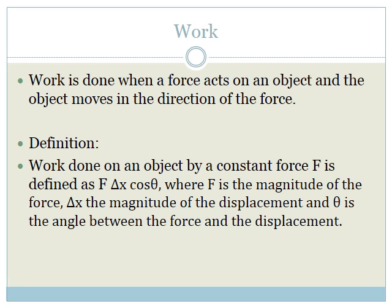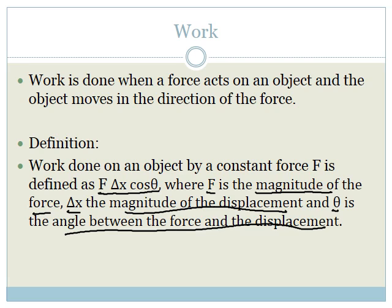The formal definition of work is: work done on an object by a constant force is defined as F·ΔX·cosθ, where F is the magnitude of the force, ΔX is the magnitude of the displacement, and θ is the angle between the force and the displacement. You need to know this definition very well.